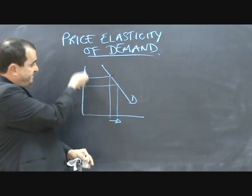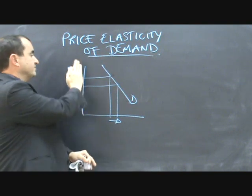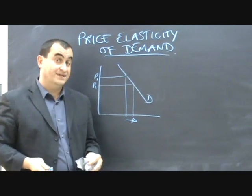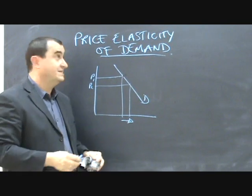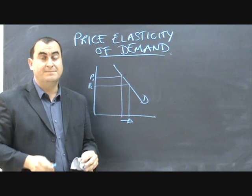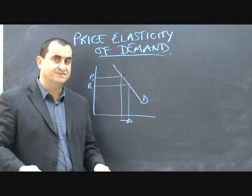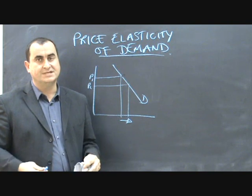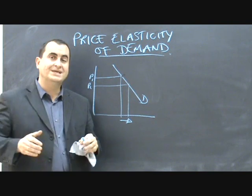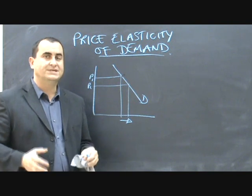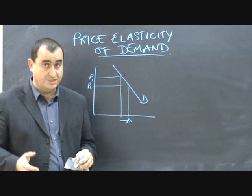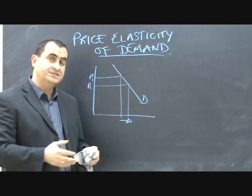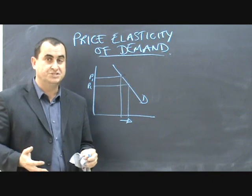Of course price could rise and quantity demanded could fall, but how much does it fall? That's what price elasticity of demand is all about — measuring the responsiveness of quantity demanded when there's a change in price. We can calculate it; we can give price elasticity of demand an actual numerical value, and we need an equation to do that.